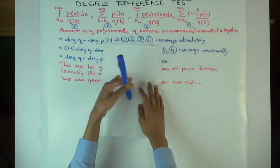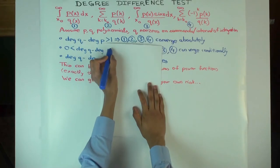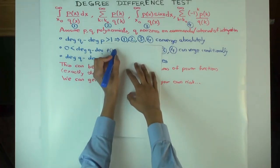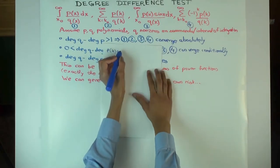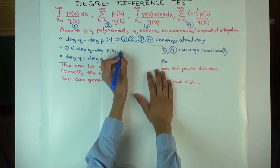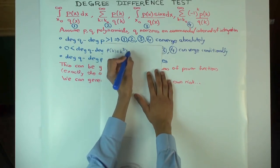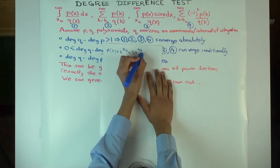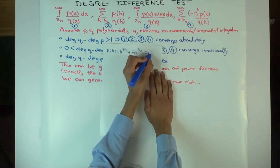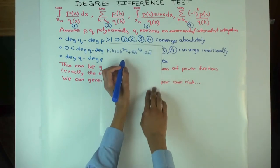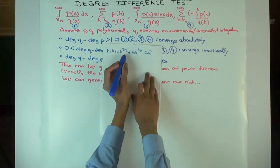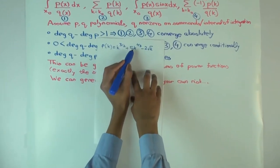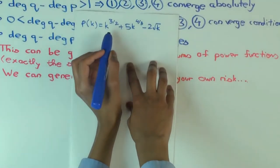So what I mean is, you could have a situation like this pk is, let's say, k to the 3 over 2 plus 5k to the 4 over 3 minus 2 root k. Now this is not a polynomial, but you notice that it involves sums of powers of k.